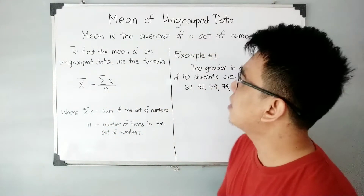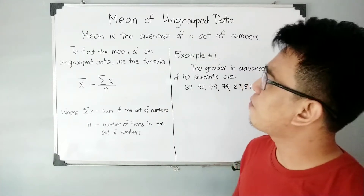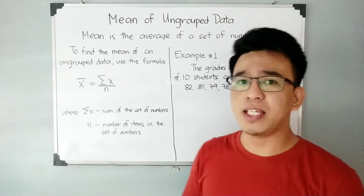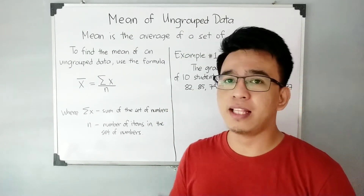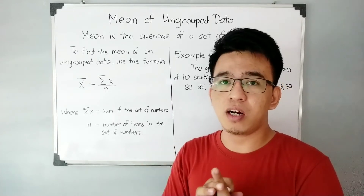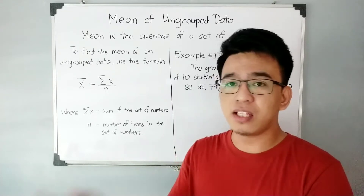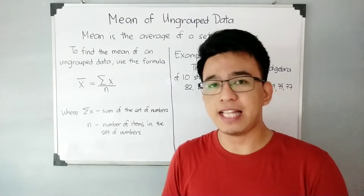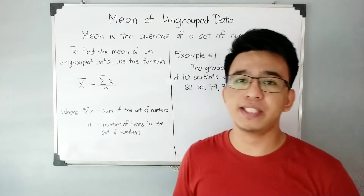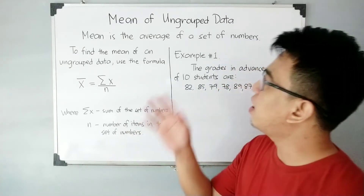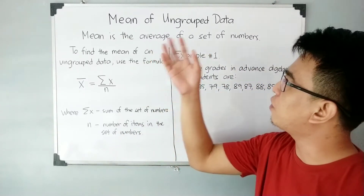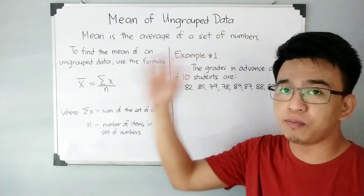Basically guys, before I start defining the mean, I want you to remember that mean, median, and mode are under the measures of central tendency. Again, the measures of central tendency. And this time, our target is to calculate for the mean of ungrouped data.